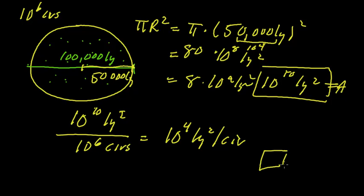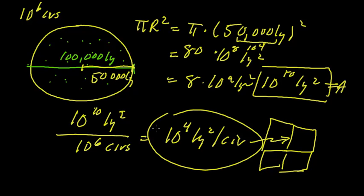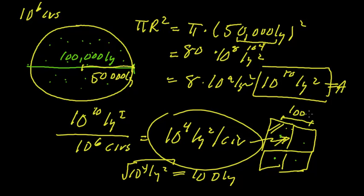So now we imagine each civilization has their own little area. And that area has an area of 10 to the 4th light years. This little area here has 10 to the 4th light years. This area here has 10 to the 4th light years. And so on. And we imagine our civilizations uniformly in the middle of these things. Which then means that on a side, we should have the square root of 10 to the 4th light year squared, which is simply 100 light years.